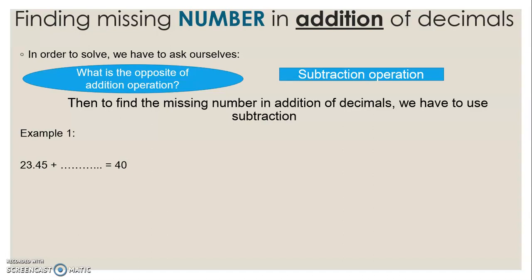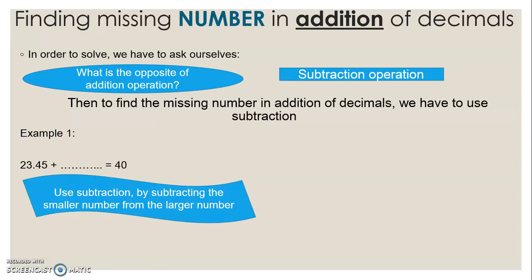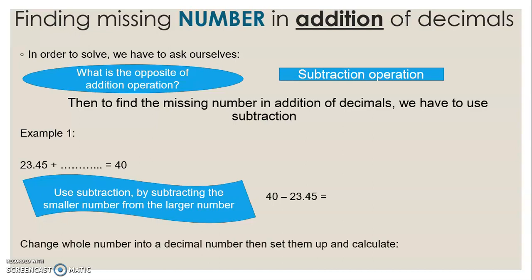Example 1: 23.45 plus what number equals 40? In order to solve, we have to use subtraction by subtracting the smaller number from the larger number. That means 40 minus 23.45. I have to change the whole number 40 into a decimal number: 40.00 minus 23.45. Set the decimal numbers above each other, decimal points above each other. I borrow and calculate the answer, which is 16.55.